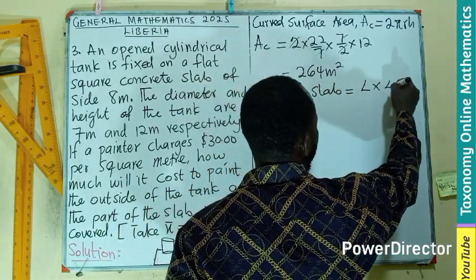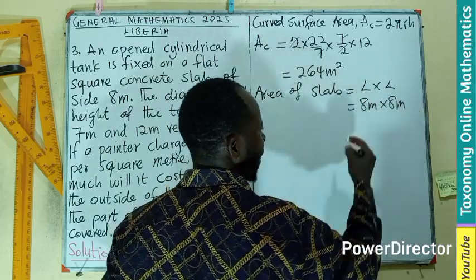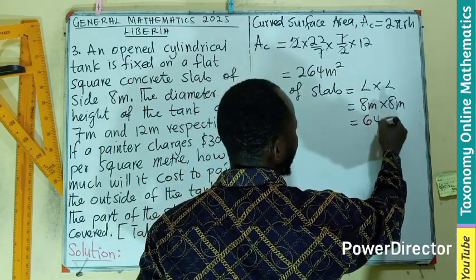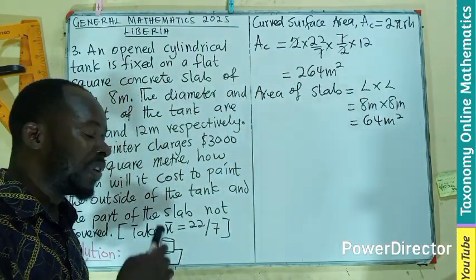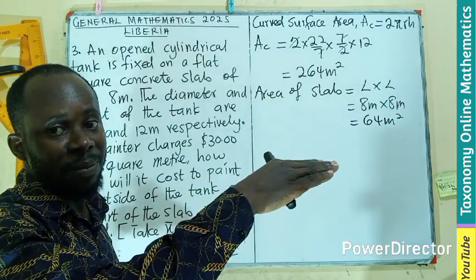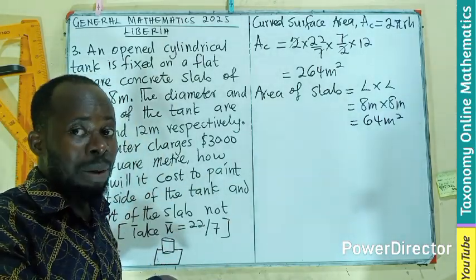Length times length: 8 meters by 8 meters. That would be 64 meter squared. If the cylinder is not sitting on this, this would have been the area covered. But the bottom of the cylinder is sitting on that place, which is covering the area of the base.